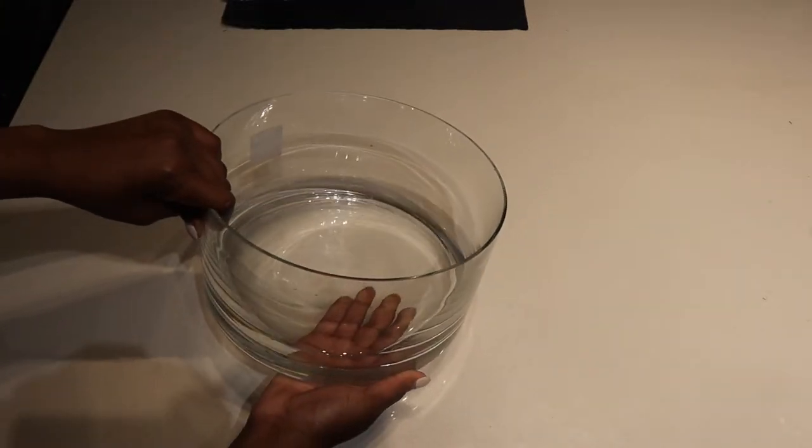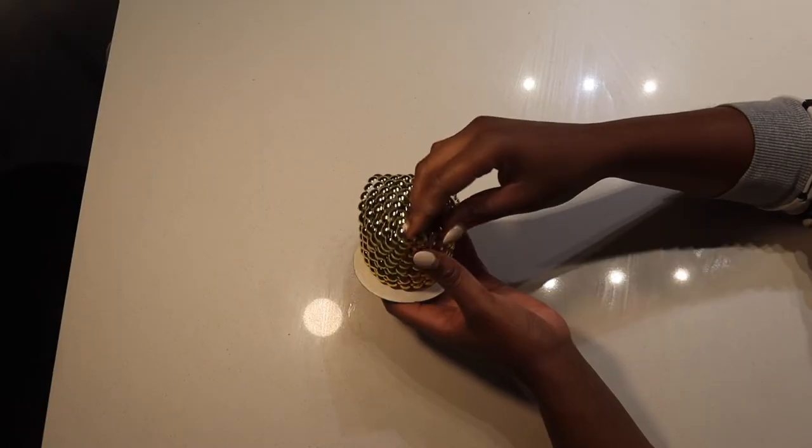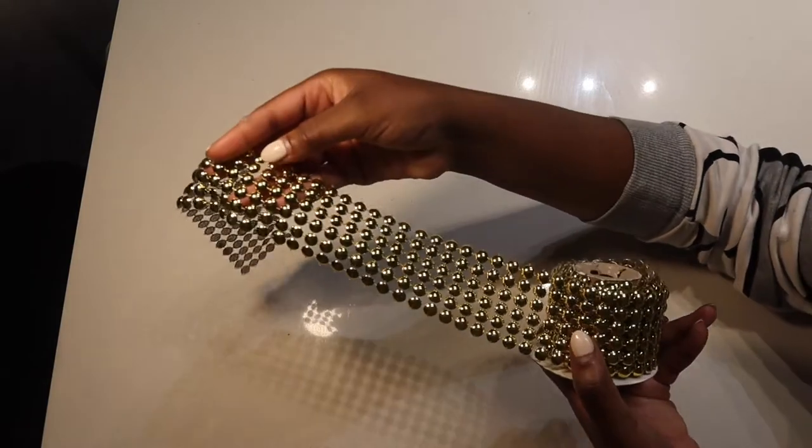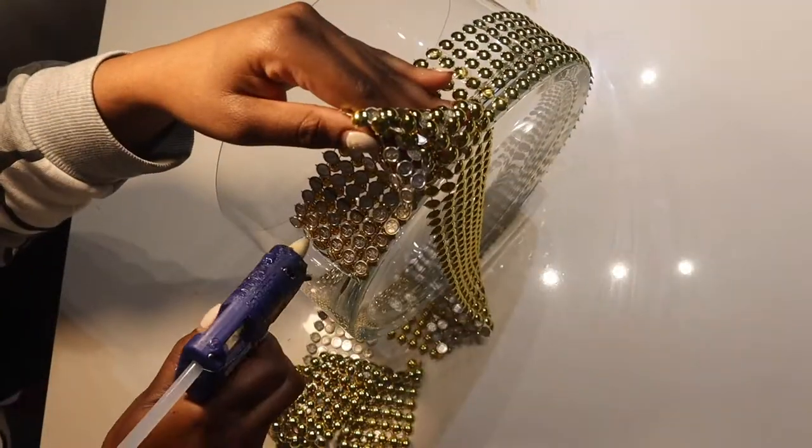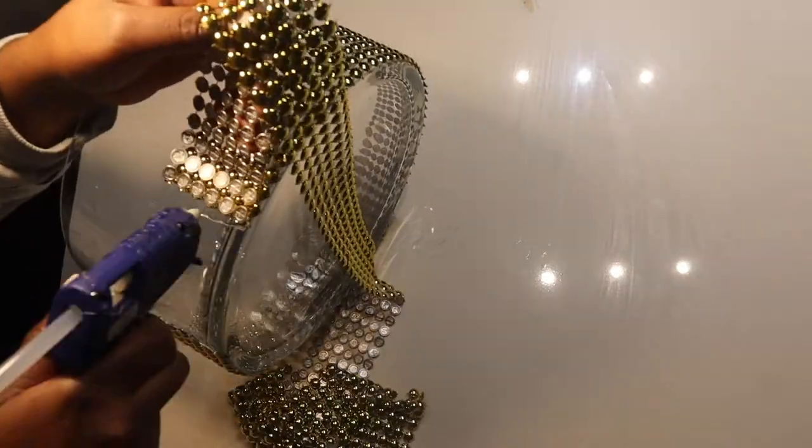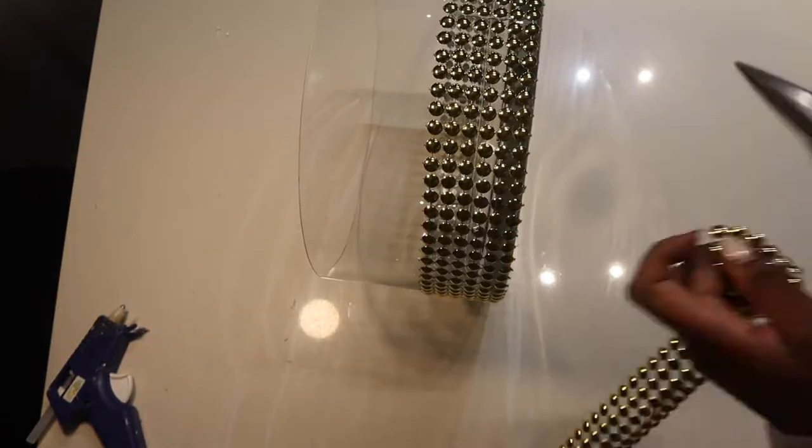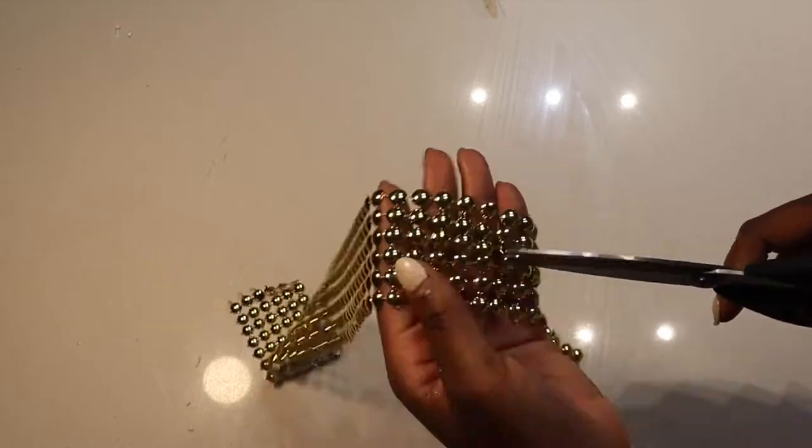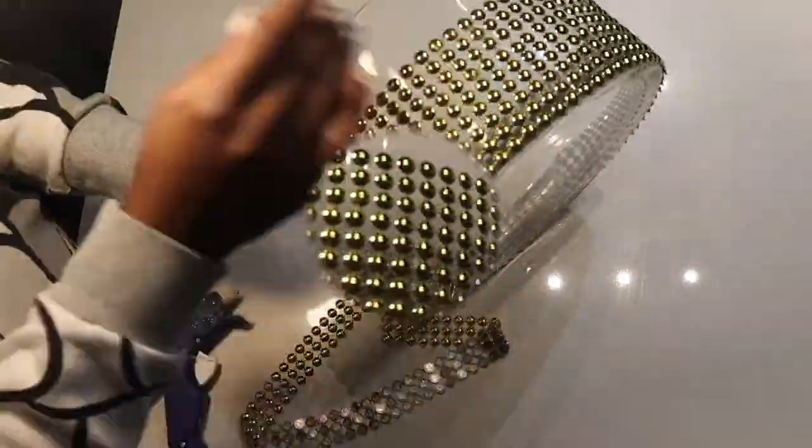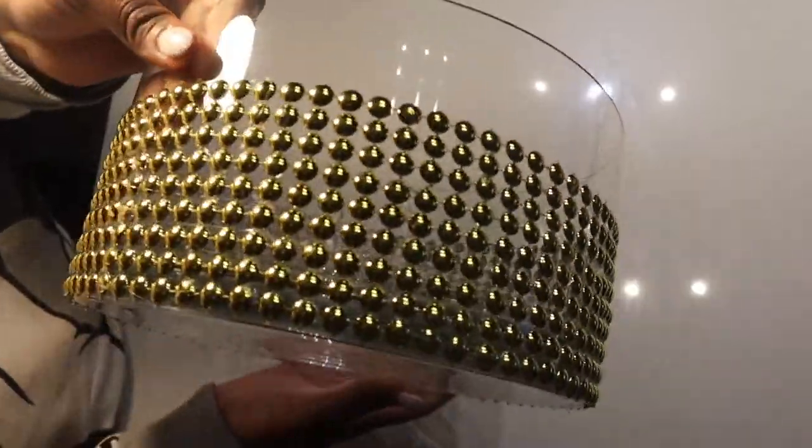So the first item we're gonna be using is this Christmas decorated ribbon that I honestly just found in my craft drawer. I'm just gonna take it and start wrapping it around my bowl. I use hot glue every third or fourth row, which was enough adhesive to keep it sturdy. Because I only wanted my ribbon to go halfway up on my bowl, I cut my next strip in half.